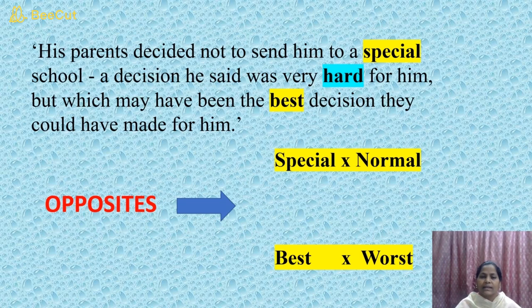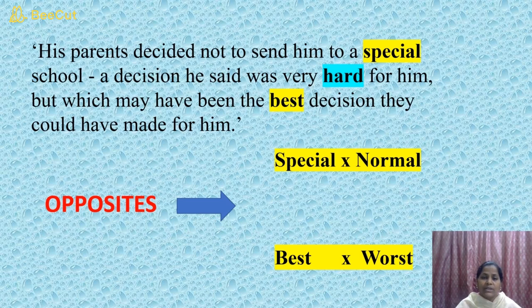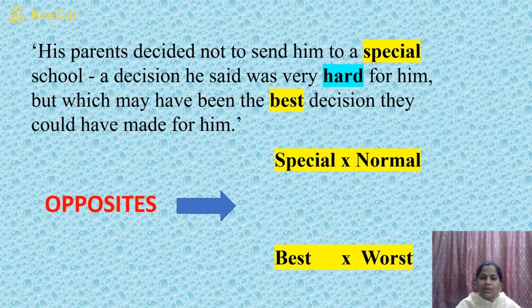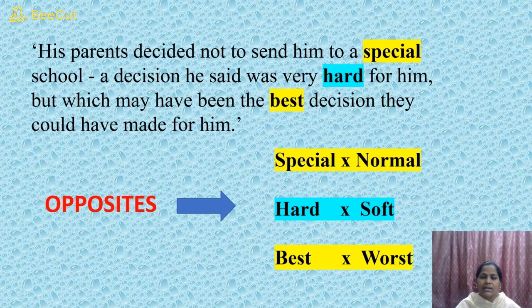Though in the beginning he felt it was very difficult to mingle with common students, he later felt that was the best decision his parents made for him. Here are two more opposite words: 'hard' or 'tough' — the opposite is 'soft' or 'smooth'; and 'best' — the opposite is 'worst'. Did you all make a note of these opposite words?